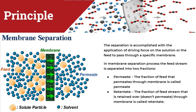Coming to the principle of membrane separation, the separation is accomplished by applying a driving force on the solution or feed to pass through a specific membrane. In this process, the feed stream is separated into two fractions. As you can see in this picture, this is a membrane and this is a feed. The feed has solute particles and solvent — the cream color represents solute particles and the blue color molecules are the solvent particles.